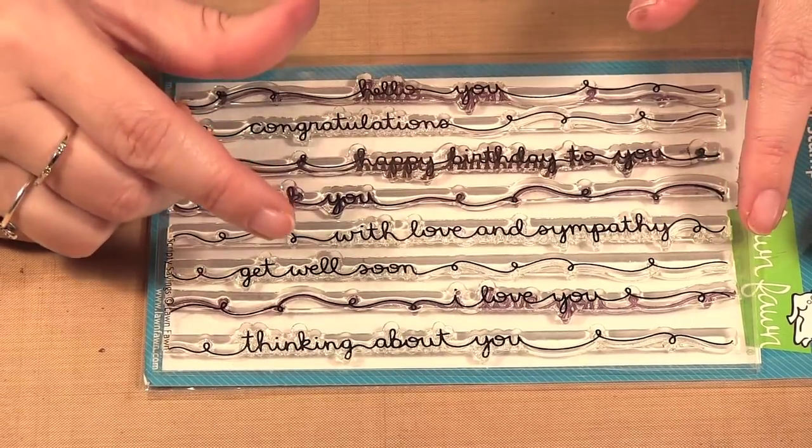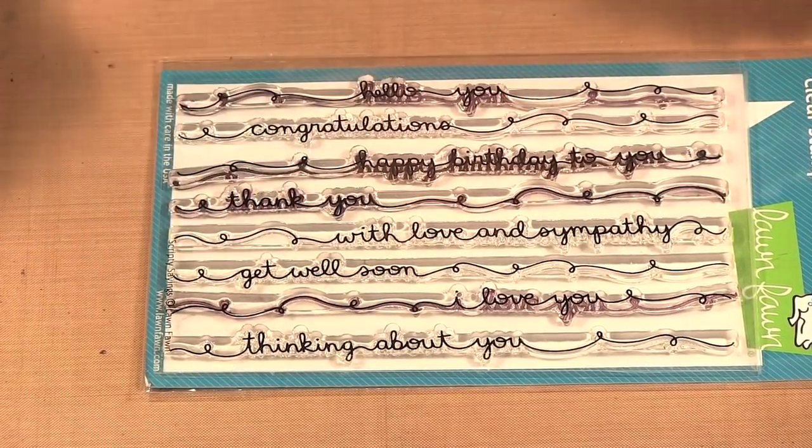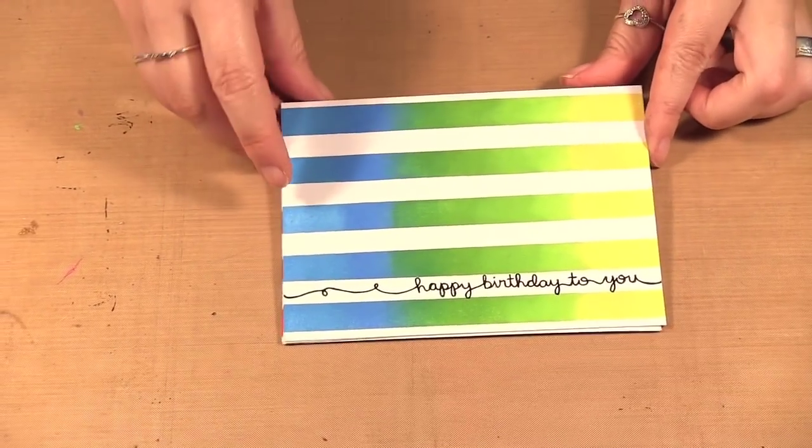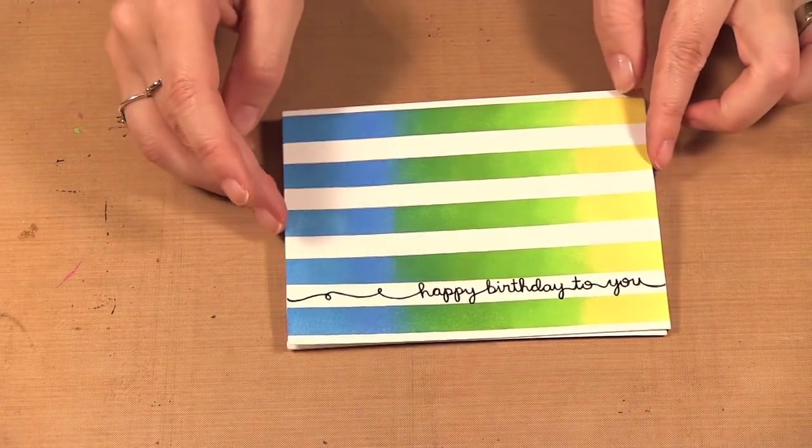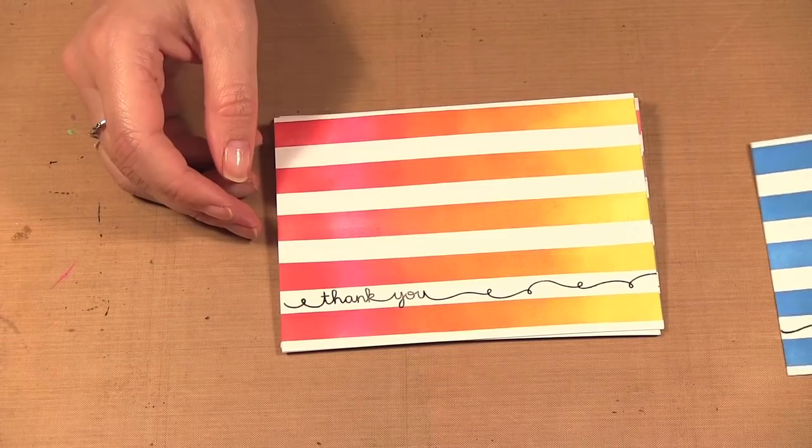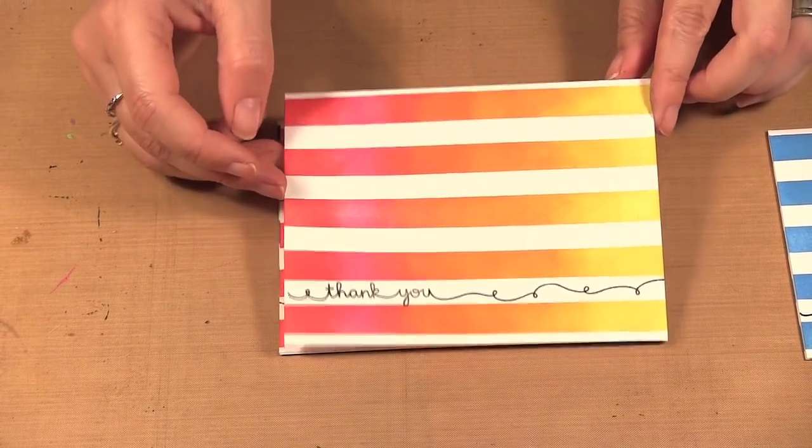What's great is the length of the stamps. You can use these on cards, an A2 card both horizontally and vertically. So I made these simple cards here with some masking and distress inks. This one I went from yellow to blue, and here I did yellow, orange, pinks, and reds.